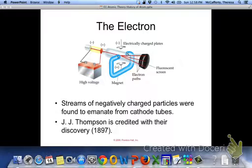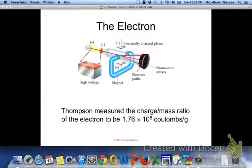JJ Thompson is credited with the discovery of the electrons through this experimental setup. He found the charge-to-mass ratio of the electron to be about 1.76 times 10 to the eighth coulombs per gram.